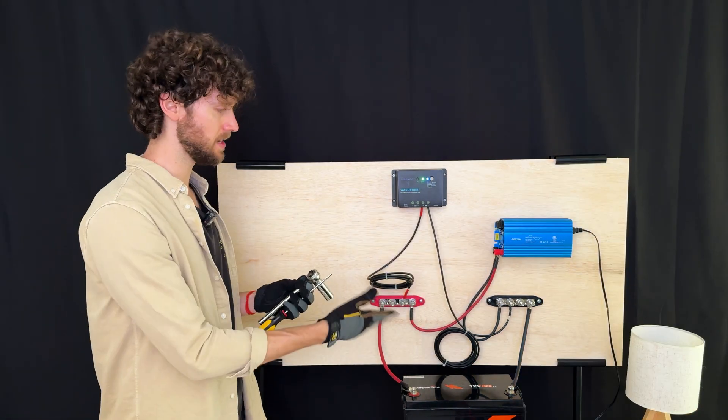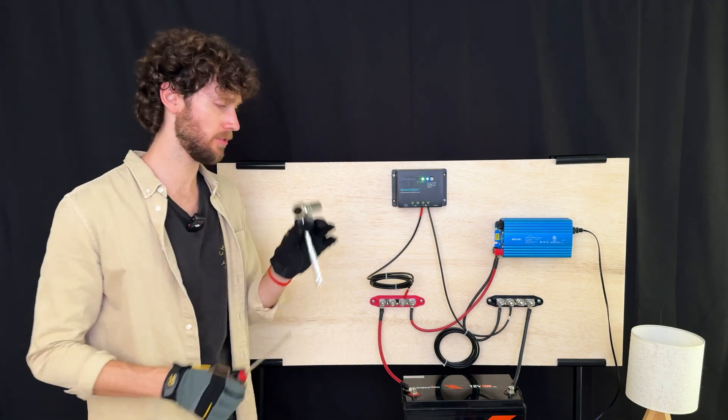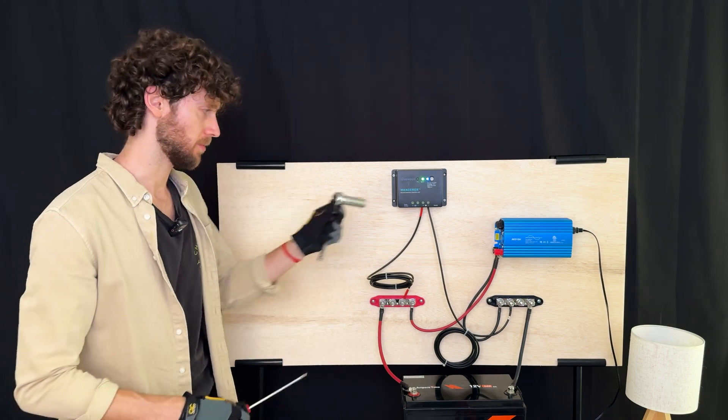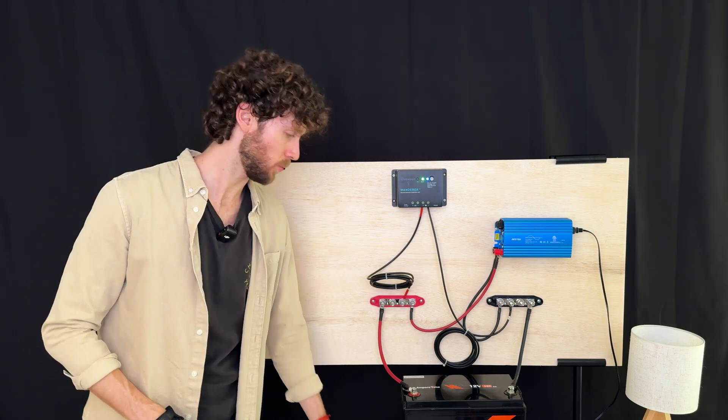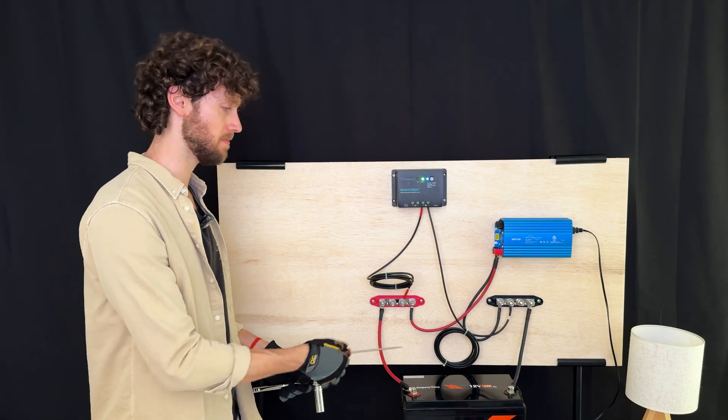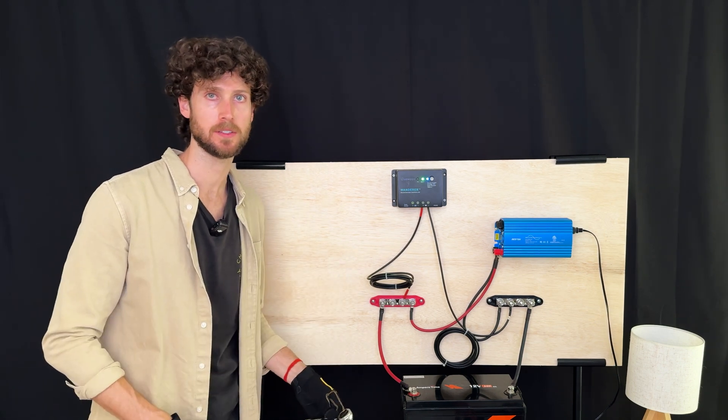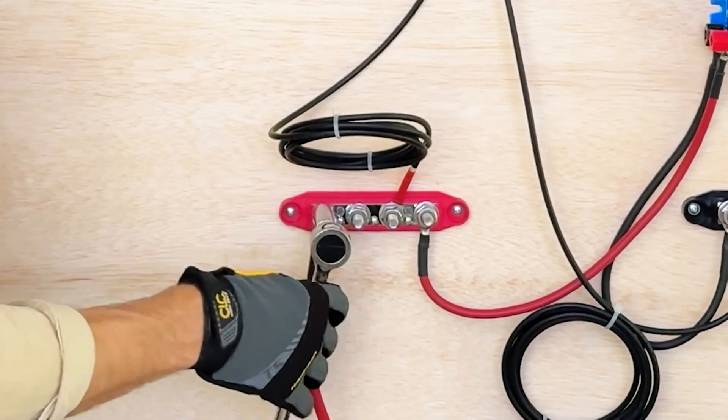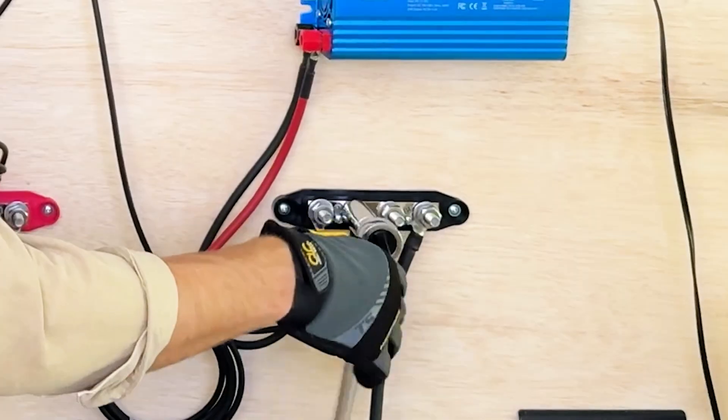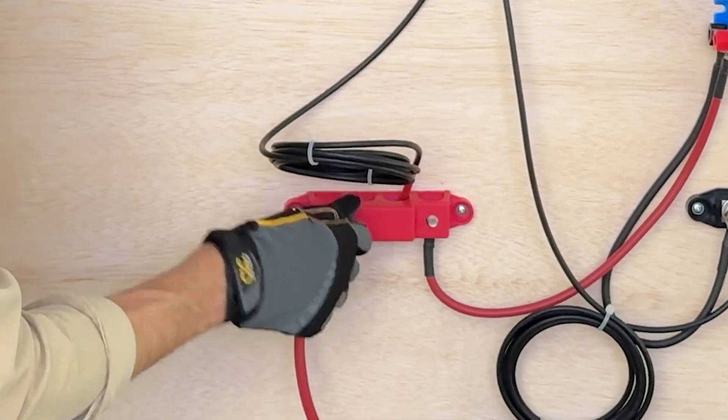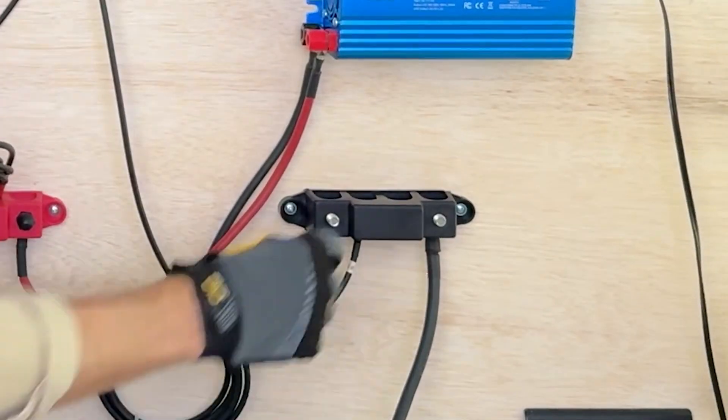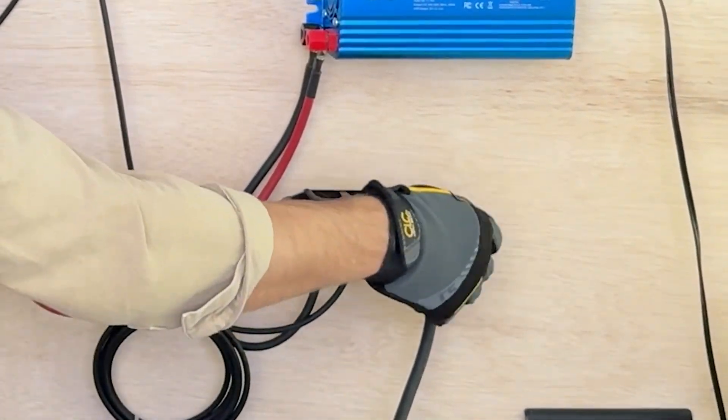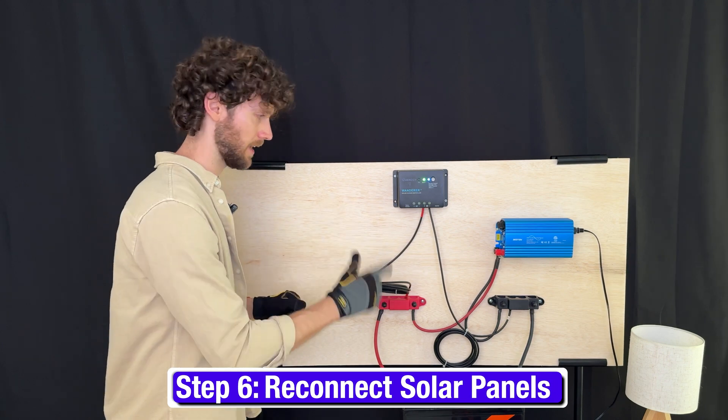Now, because I hand tightened everything, I'm going to take my screwdriver and my ratchet and I'm going to go back and tighten everything. And then we can put the caps back on to the battery terminals and bus bars. Okay, so the bolts are tightened, caps are back on.